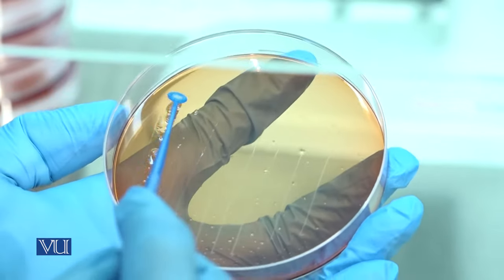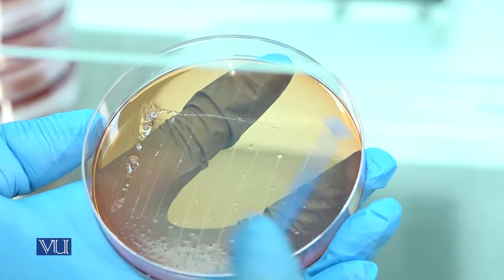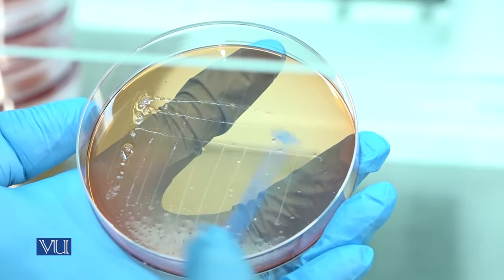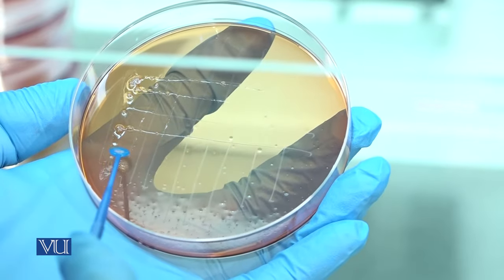Rotate the plate at 90 degrees and from the edge of area 1, make 5 or 6 streaks to the opposite side of the plate as being demonstrated.